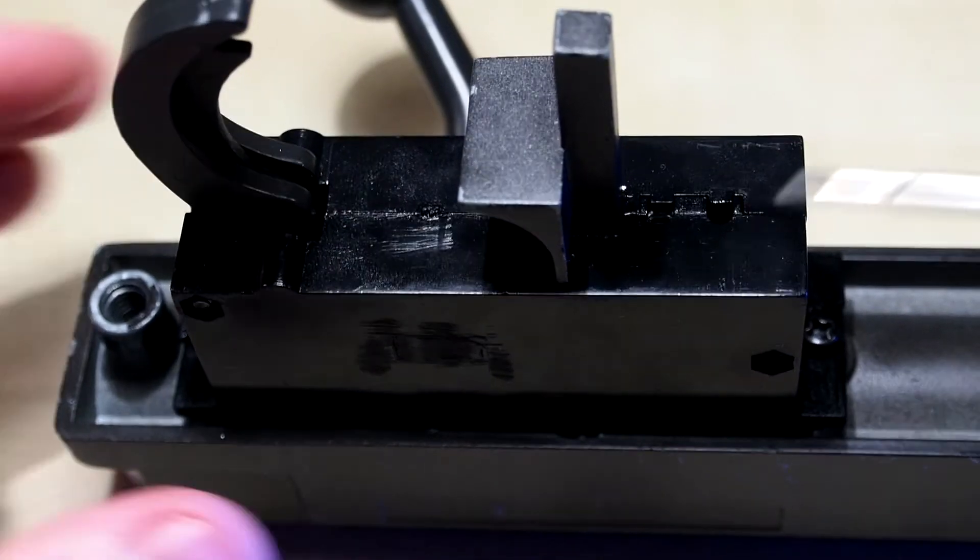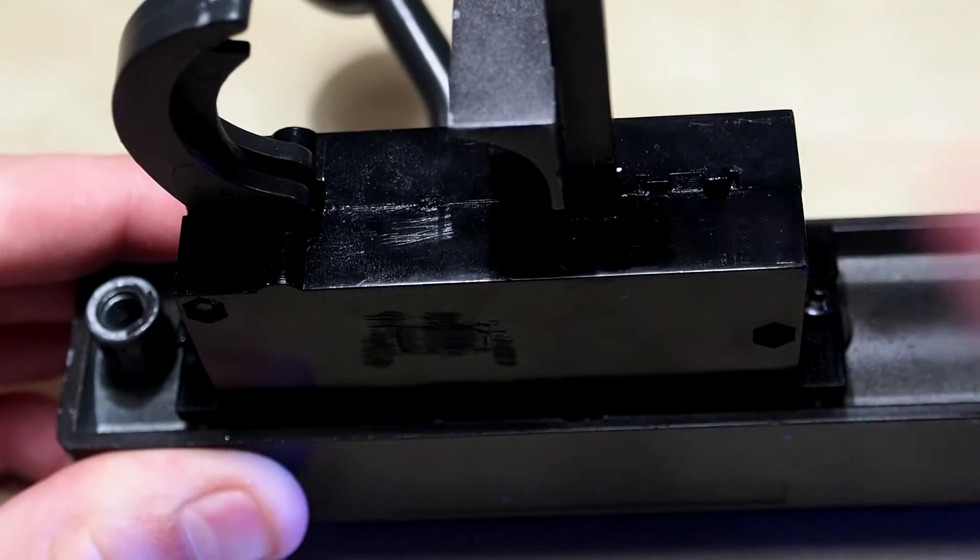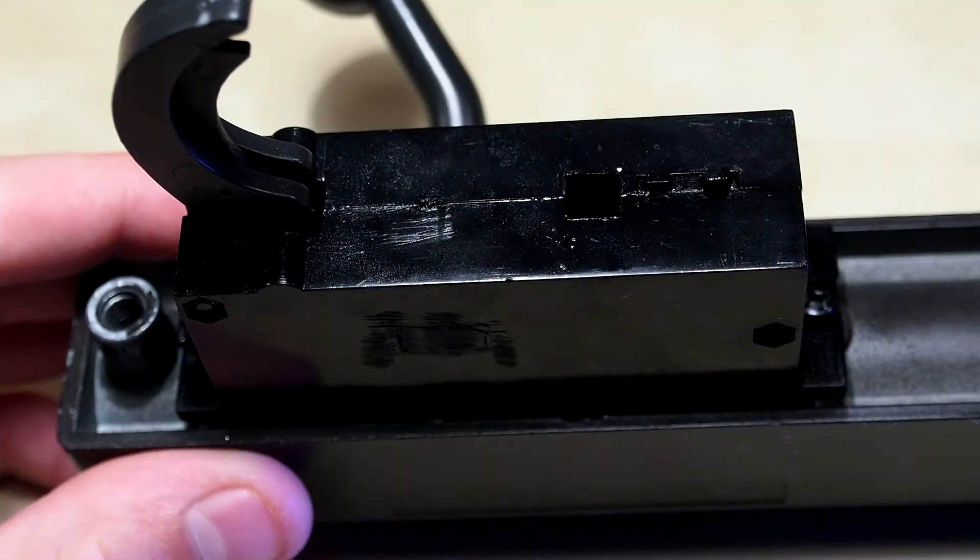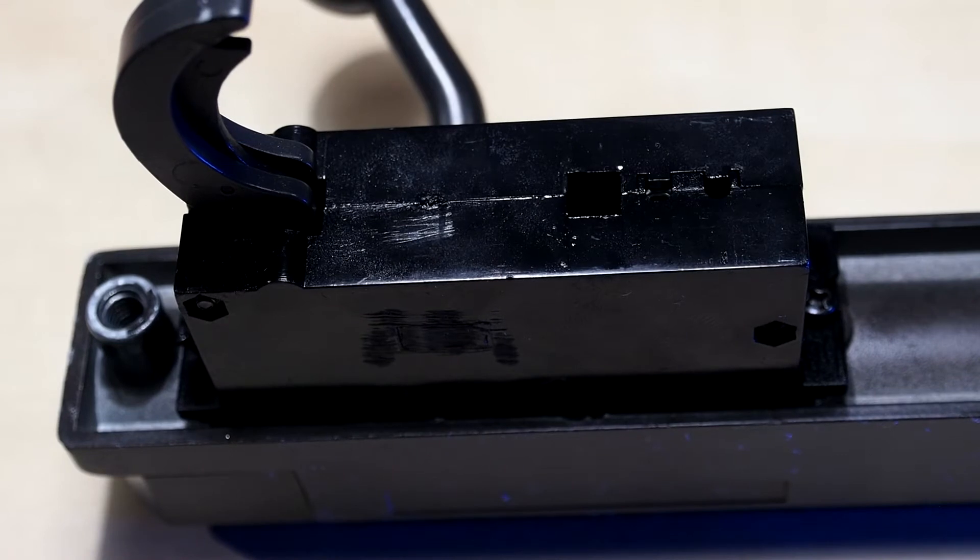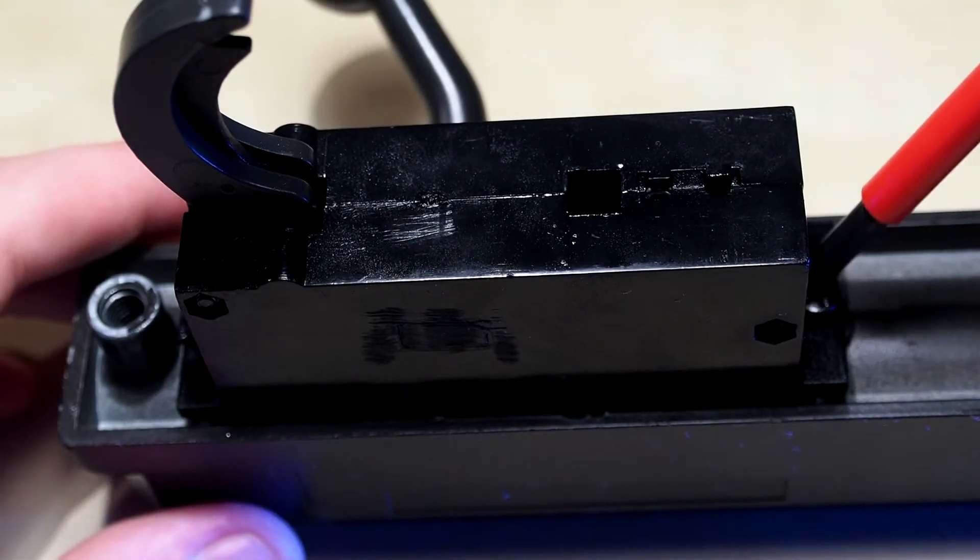First assemble the upper from the lower, then turn the upper upside down and remove the pin holding the cylinder in the gun. Then you can remove the two screws holding the trigger box to the gun.